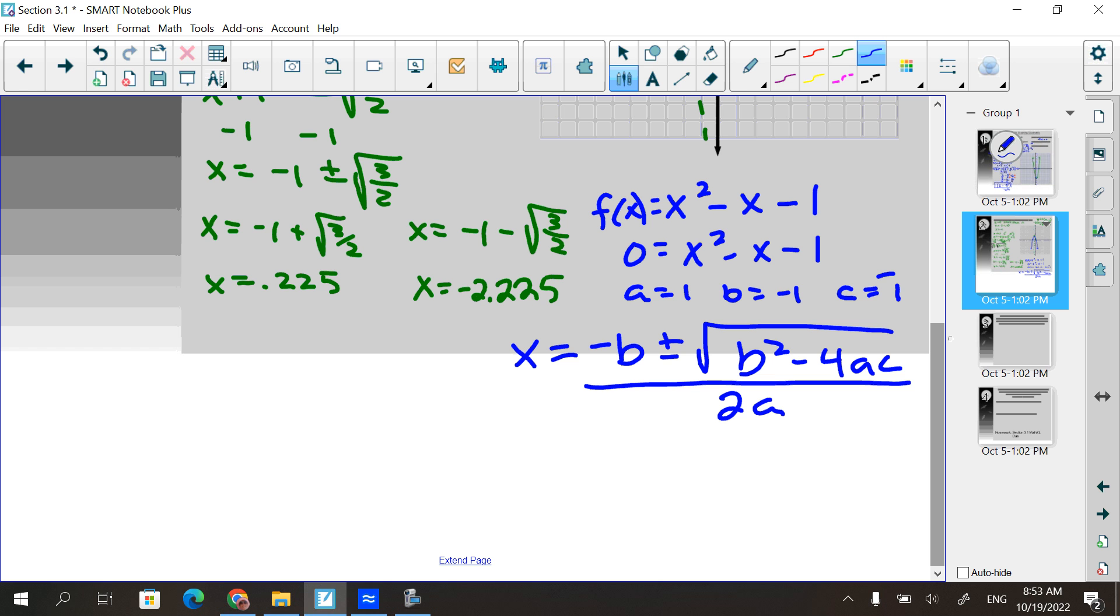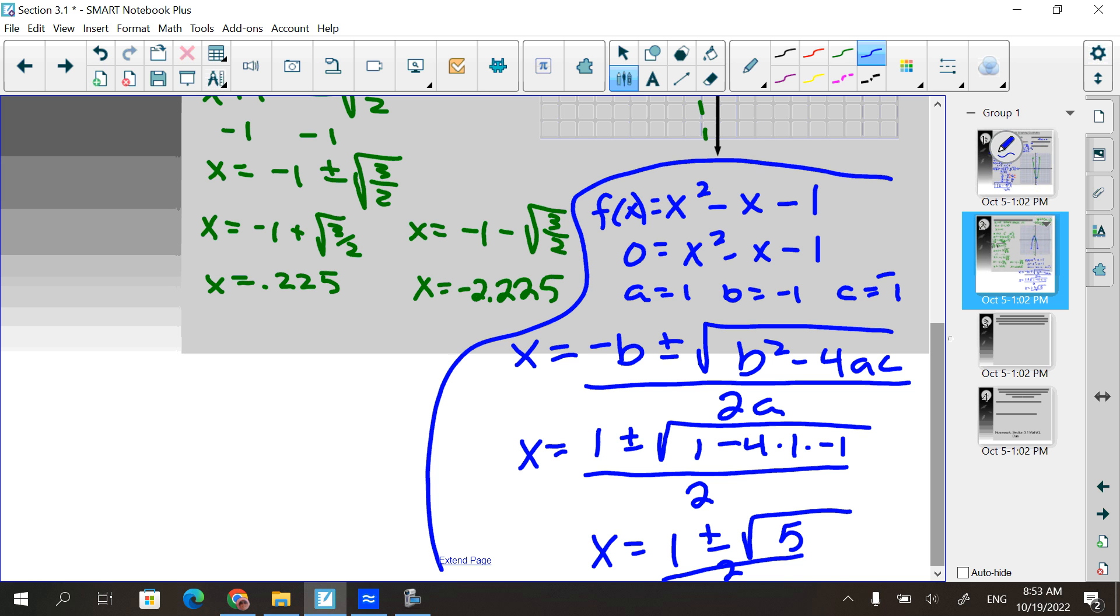X equals opposite of B plus or minus square root of B squared minus 4AC over 2A. And you can pop the numbers in there. So here I'd have X equals 1 plus or minus the square root of 1 minus 4 times 1 times negative 1 all over 2 times A, which is 2. 1 plus or minus the square root of 5 over 2. And then you'd be at that same place. So again, I just wanted to remind you of that. Not that I needed to do that on this problem, but you could come across where maybe you want to do that. Or maybe you're really bad at factoring and you like quadratic formula better. You could do that as well.